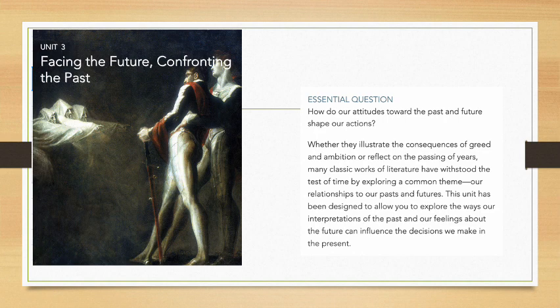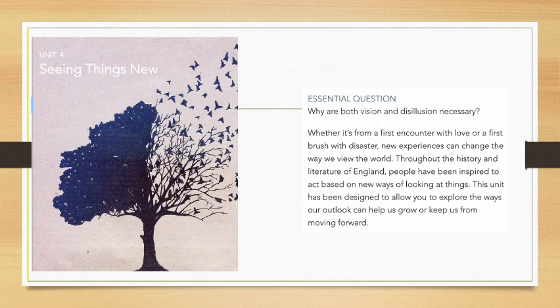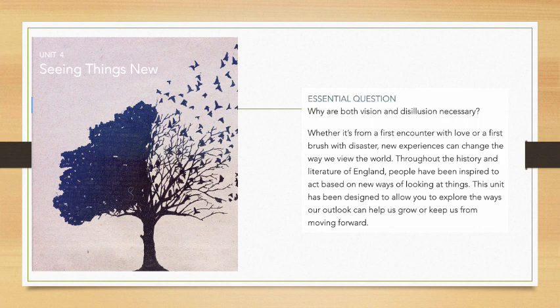Unit 4's theme is seeing new things, and the essential question is: why are both vision and disillusion necessary? Whether it's a first encounter with love or a first brush with disaster, new experiences can change the way we view the world. Throughout the history and literature of England, people have been inspired to act based on new ways of looking at things. This unit explores how our outlook can help us grow or keep us from moving forward.